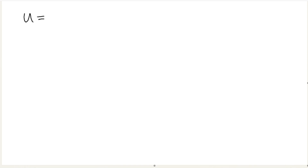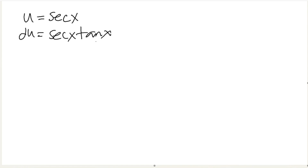So, this is a substitution where we let u equal secant of x, then du is equal to secant of x times tangent of x. But we can plug in u here. Sometimes, if you don't have secant of x times tangent of x, you can just use u.